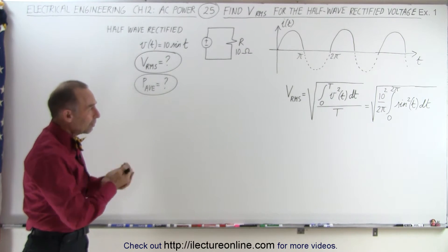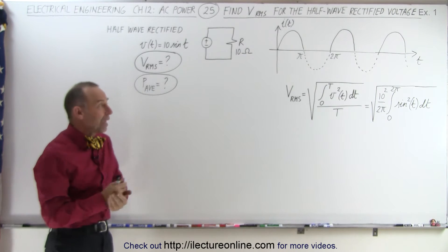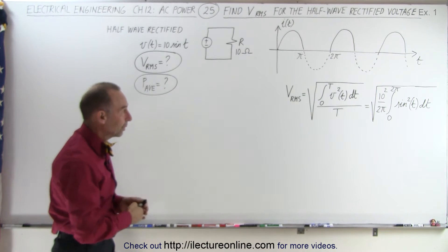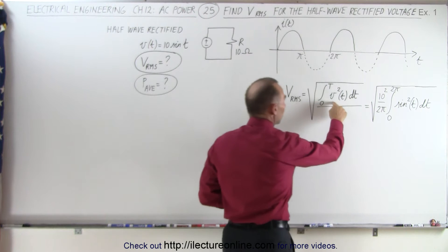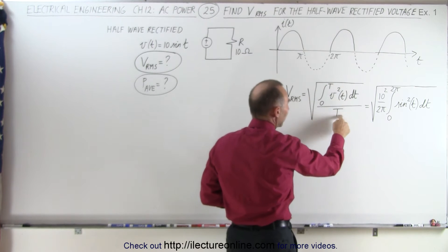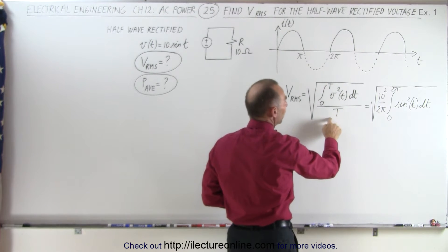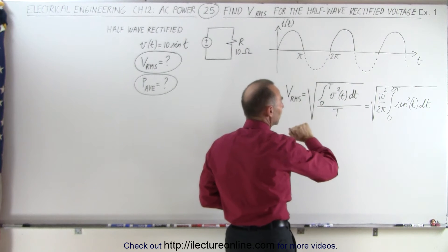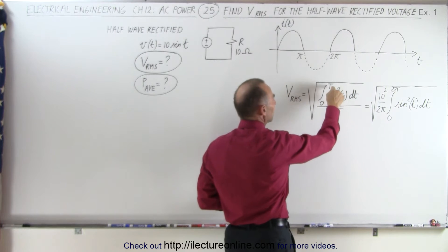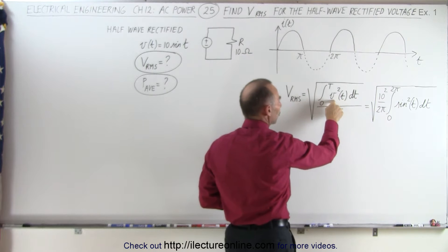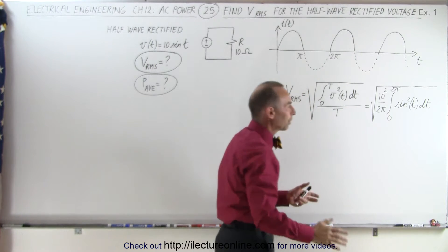The RMS voltage is found in the very same way as we find the RMS current. We take the square root of the sum of all the sample points squared, divided by the total number of sample points, and then if we turn that into an integral, we have an integral from 0 to the end of the period of the voltage squared dt, divided by the total period.